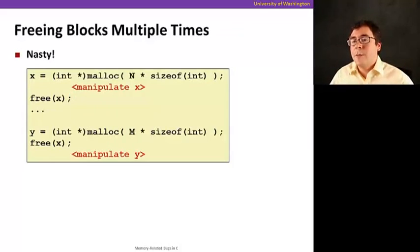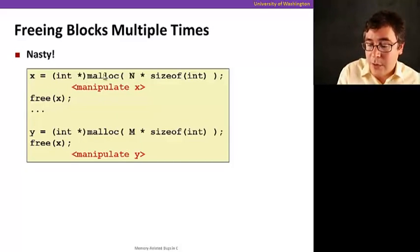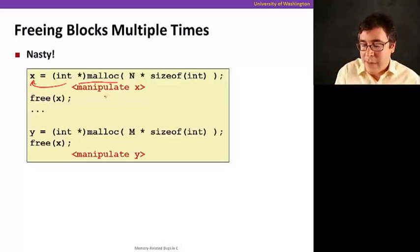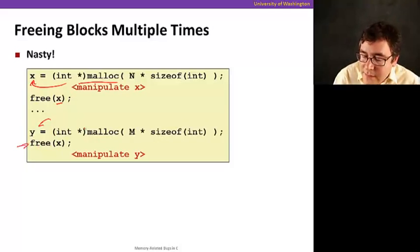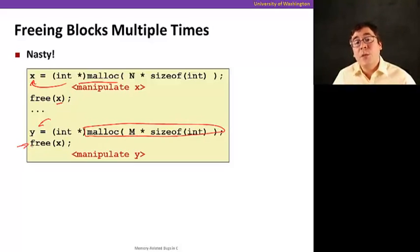So another problem that could happen with pointers is you free a block multiple times. Dangerous, too. So for example, if I allocate a piece of memory, in this example, and store into x, and manipulate it, and then later I free x after being done with it, then I allocate something to y, and then I happen to call free x again. But what if this was allocated in the same position, and I freed? That might actually be freeing y, just because it happens to be in the same place.